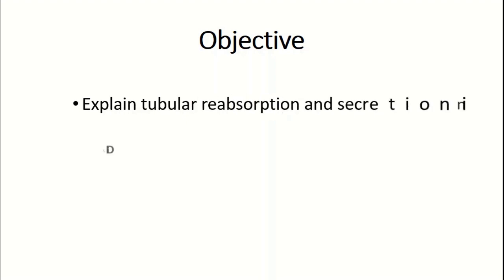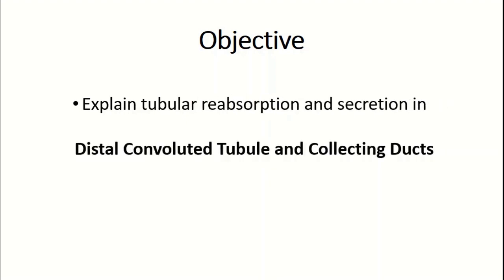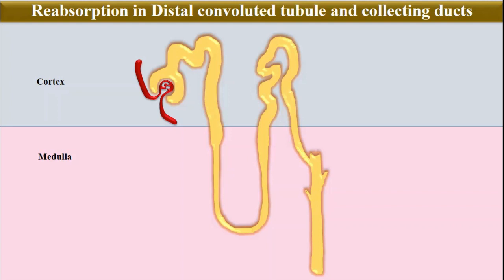In this video, I will explain reabsorption and secretion in the distal convoluted tubule and collecting ducts of the nephron. We will discuss this in two parts: the early part and the late part of the distal convoluted tubule. The early part shares characteristics with the thick ascending limb of the loop of Henle, so we will discuss its reabsorption separately, while the late part shares characteristics with the cortical collecting tubules and will be discussed collectively.